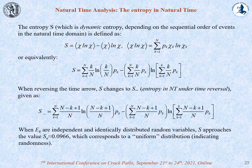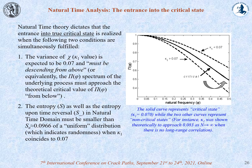The second quantity of interest in natural time analysis is the entropy S. Equally important is the entropy under time reversal. When ek are independent and identically distributed, S approaches the value 0.0966, corresponding to a uniform distribution indicating randomness. Natural time dictates that entrance into the critical state demands simultaneous fulfillment of two conditions: first, kappa1 tends to 0.07 descending from above; second, the entropy as well as the entropy upon time reversal in natural time domain must be smaller than 0.0966 of a uniform distribution.